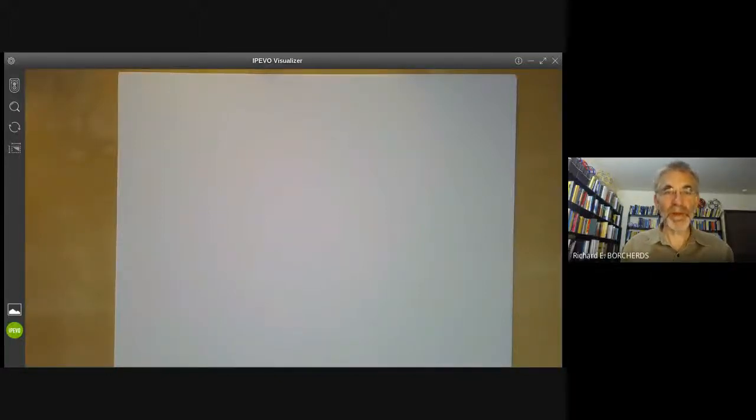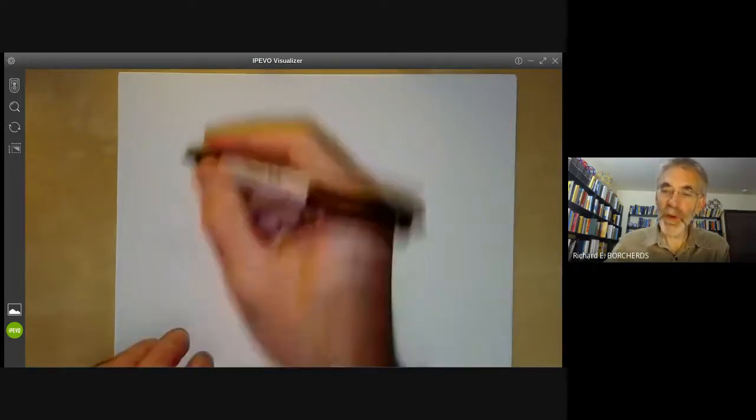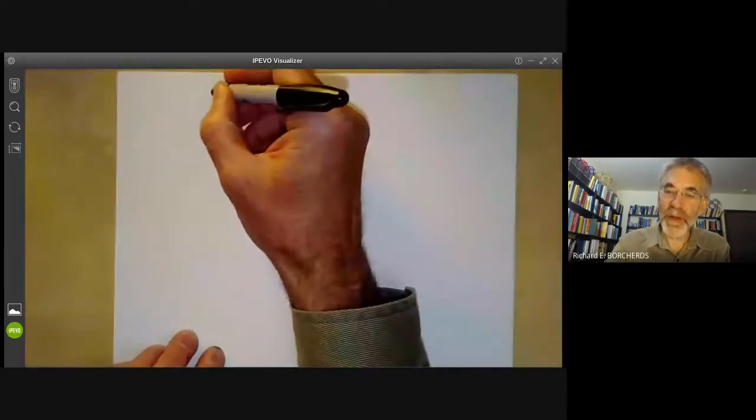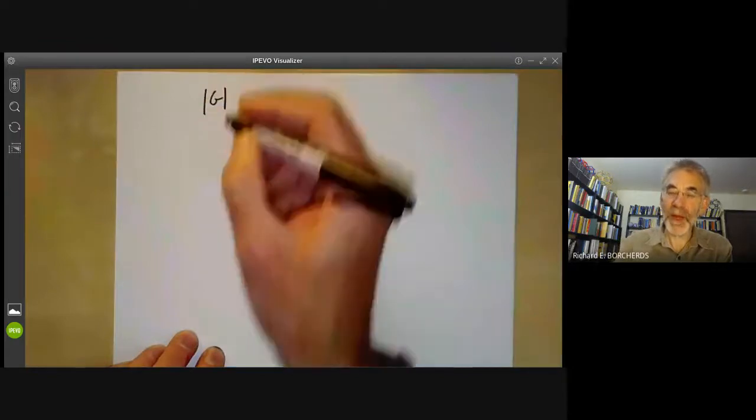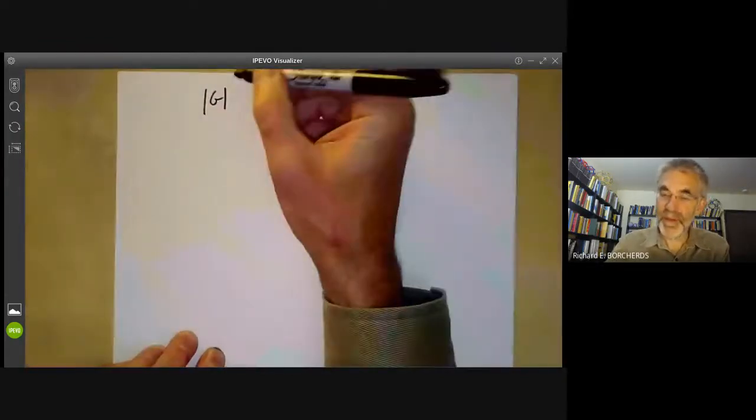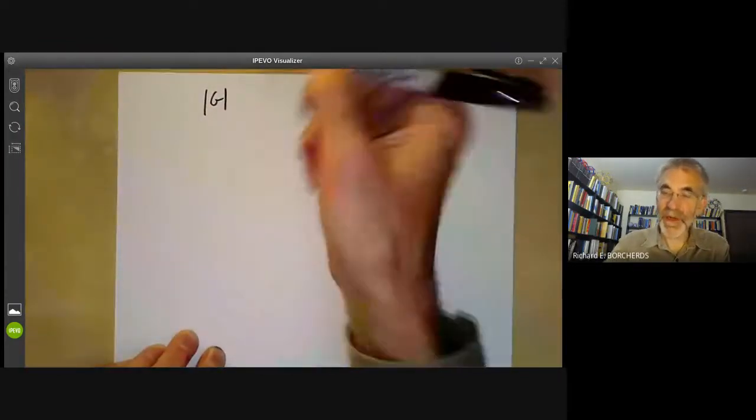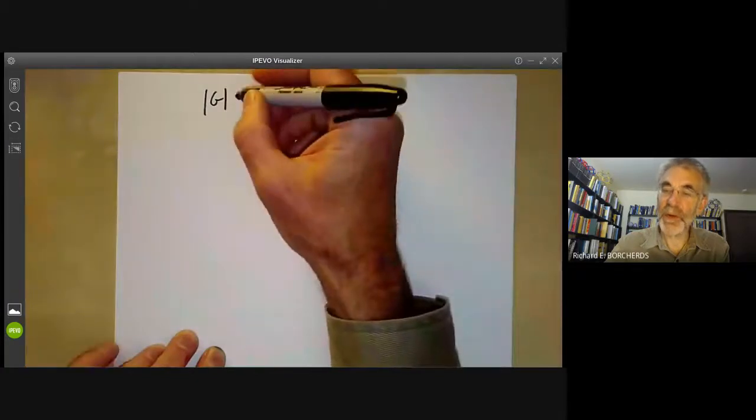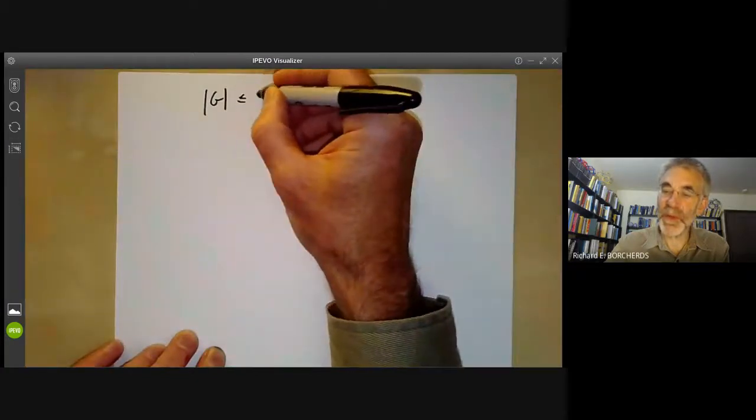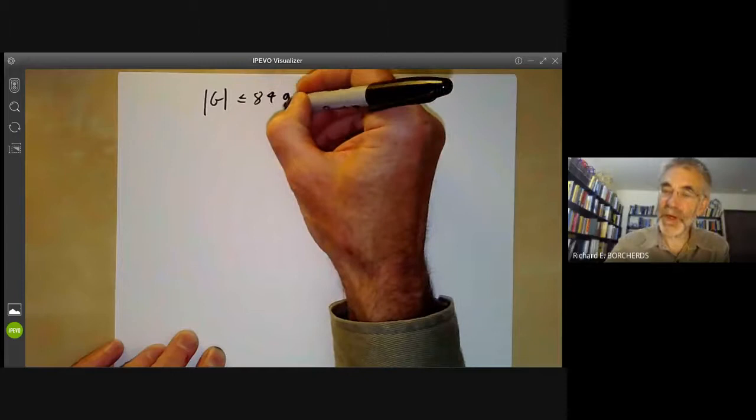This algebraic geometry video is a continuation of the previous one and will give some examples to illustrate. Recall we proved the Hurwitz bound that if you've got a complex curve projective and non-singular genus G, then the order of its automorphism group is at most 84 times G minus one.